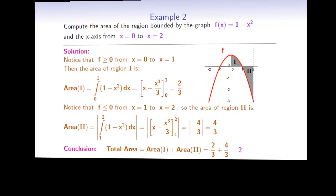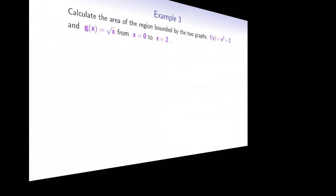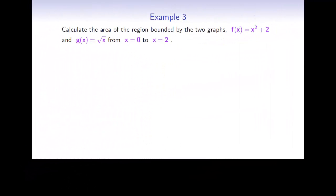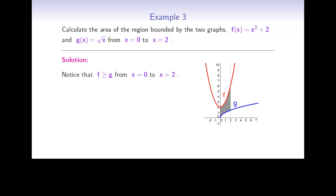Now let's move on to example number 3. Calculate the area of the region bounded by the two graphs, f(x) equals x squared plus 2, and g(x) equals the square root of x, from x equals 0 to x equals 2. We need to find the area of a region bounded between two graphs, and from the diagram we can see that f is always greater than g. So the area between the two curves will be given as the integral of f(x) minus g(x) dx, as x goes from 0 to 2.